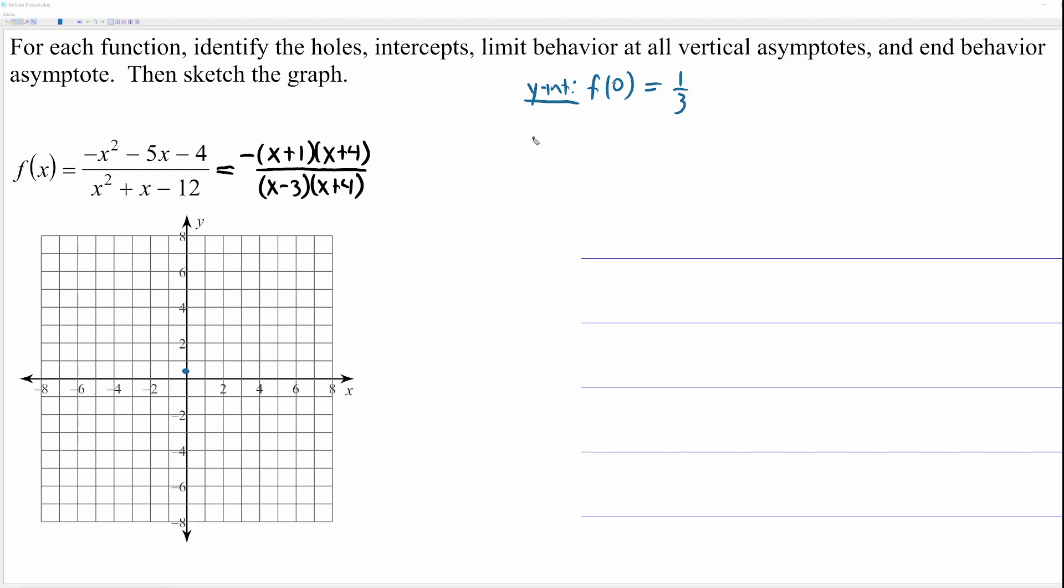Now let's find our x-intercepts. I said in the last video, that's going to happen when the top equals zero. So if you look at this factor, x plus one, if you set that equal to zero, you get x equals negative one. So we're going to have an x-intercept at negative one, zero. That's right here.